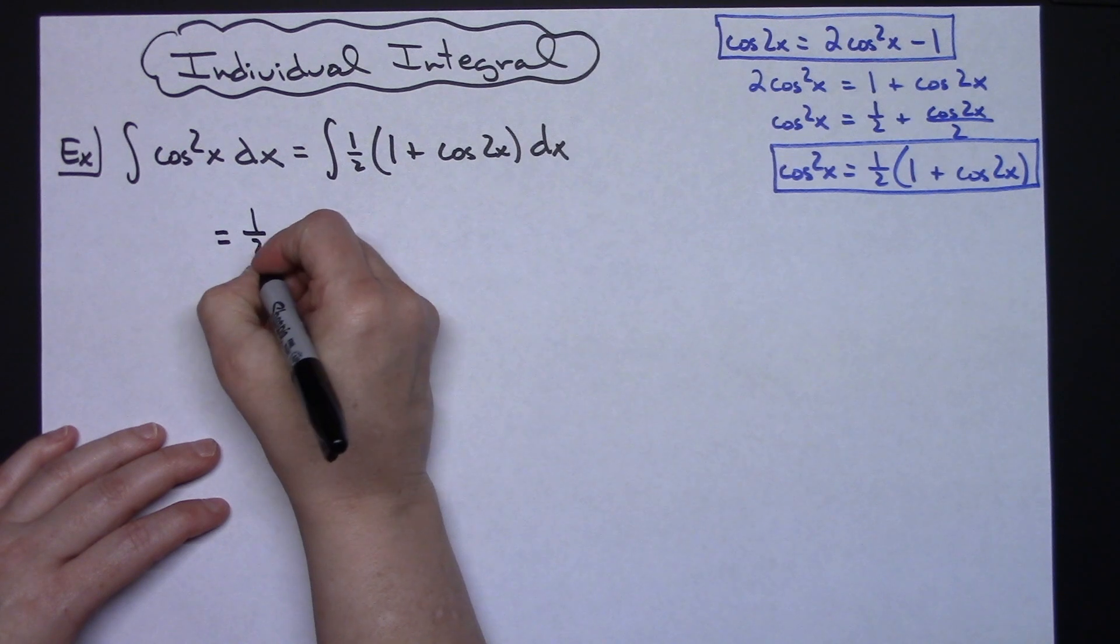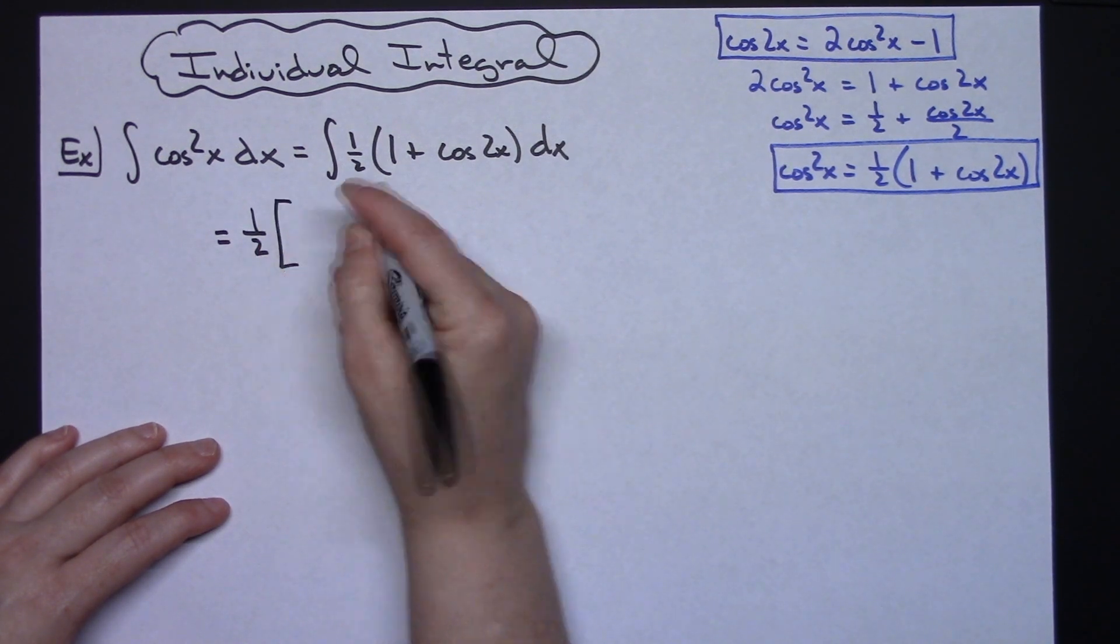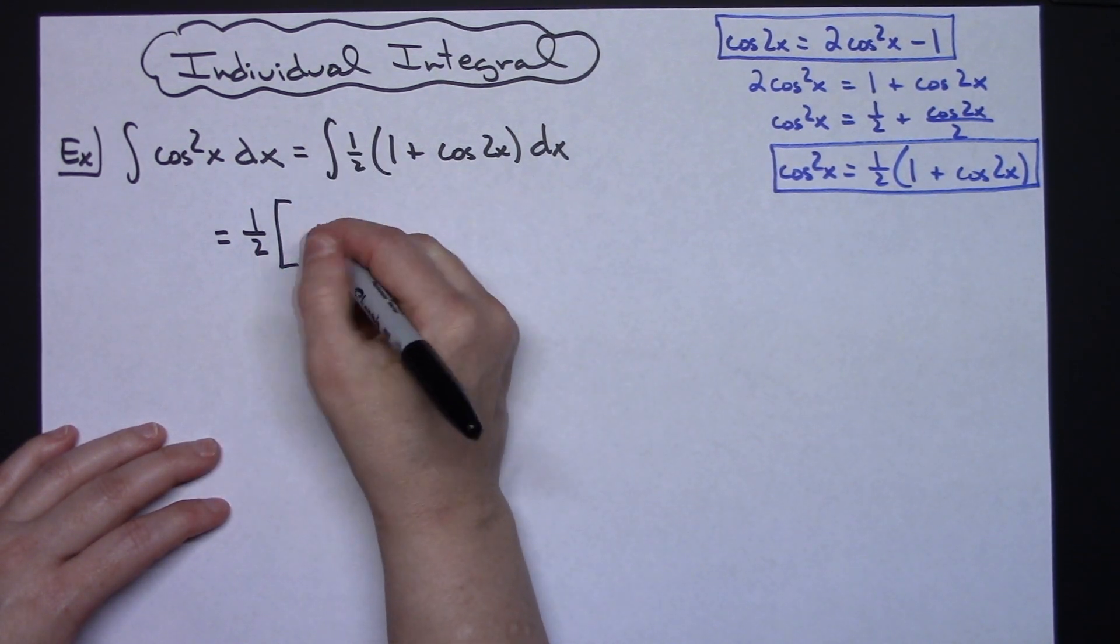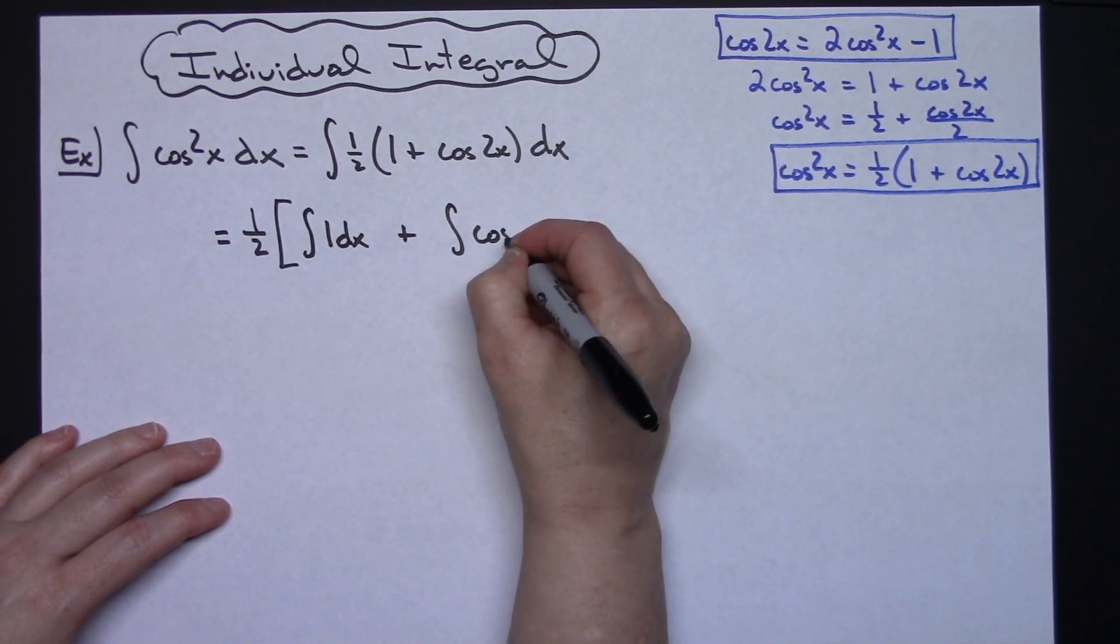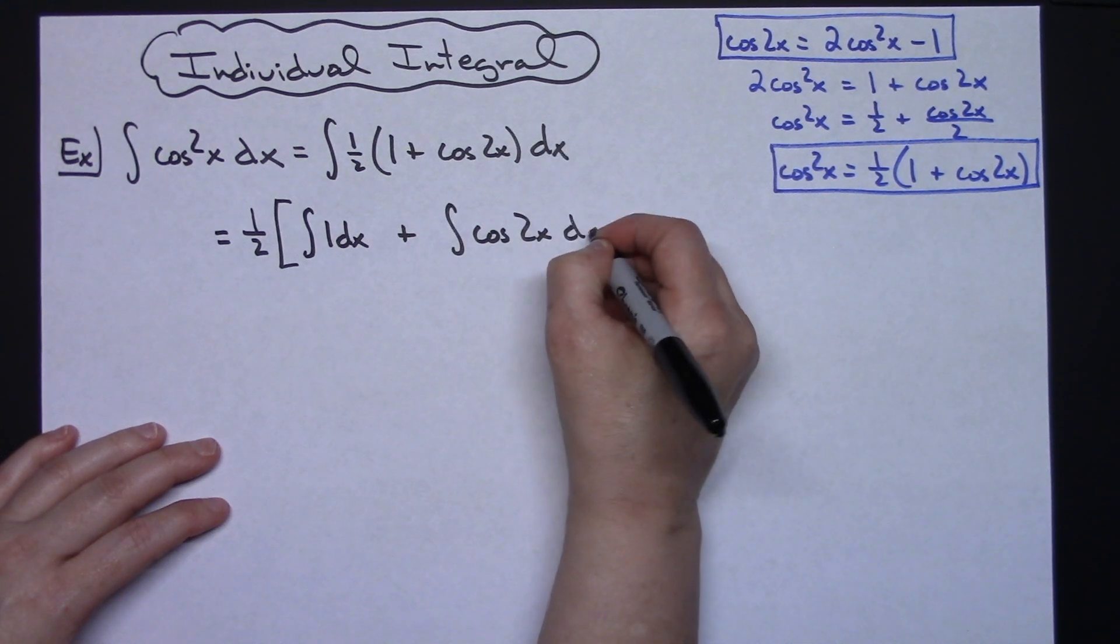So then I'm going to have the 1 half out in front. Breaking these two things up into individual integrals, I'll have the integral of 1 dx plus the integral of cosine 2x dx.